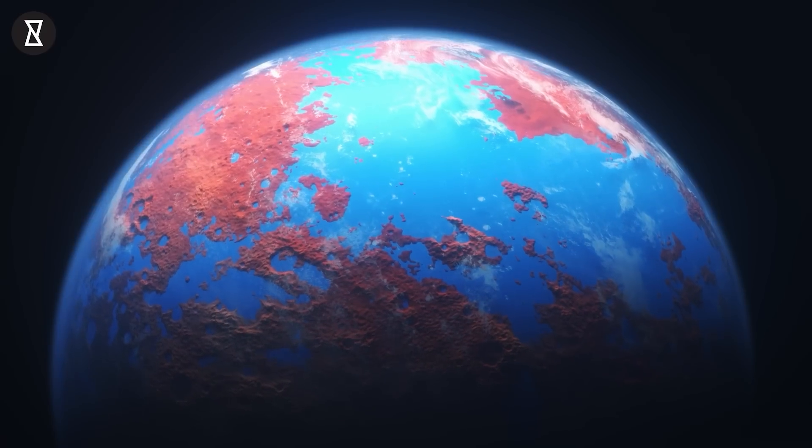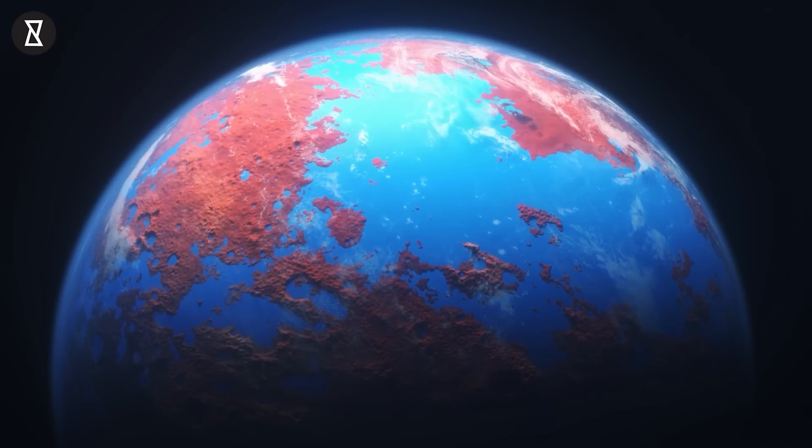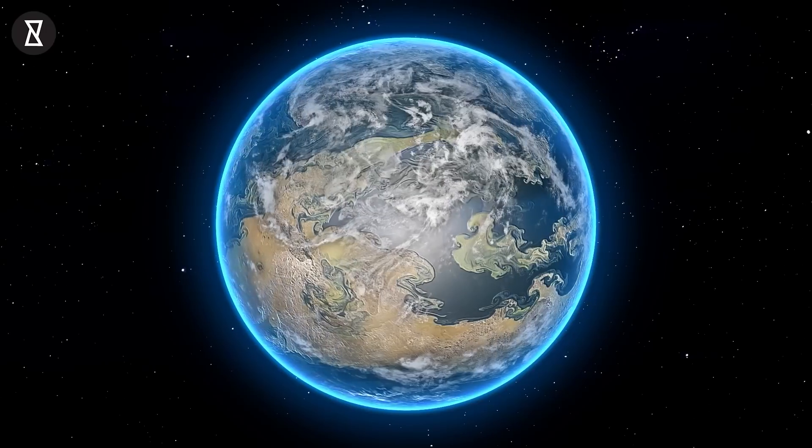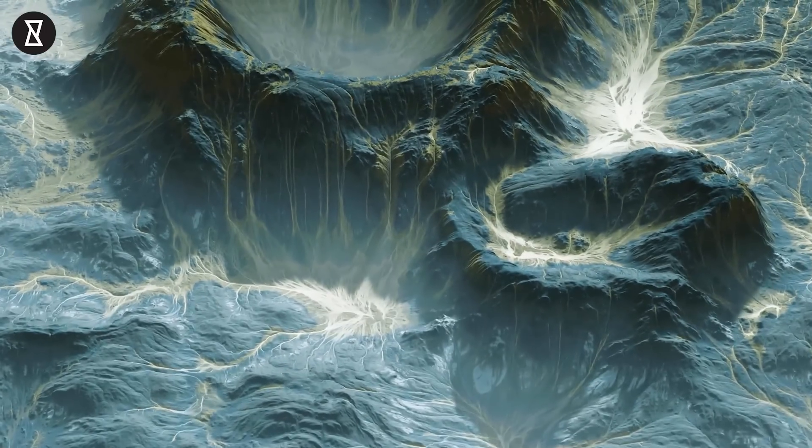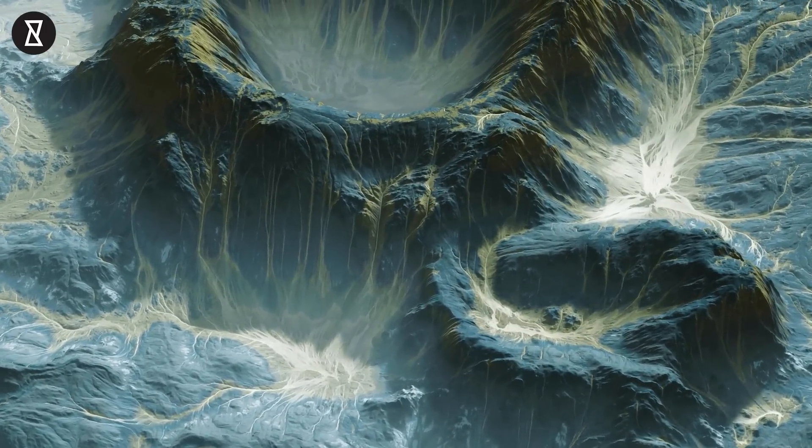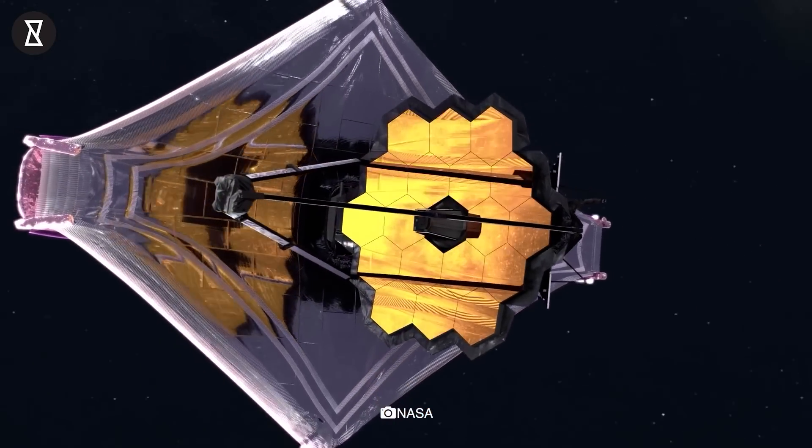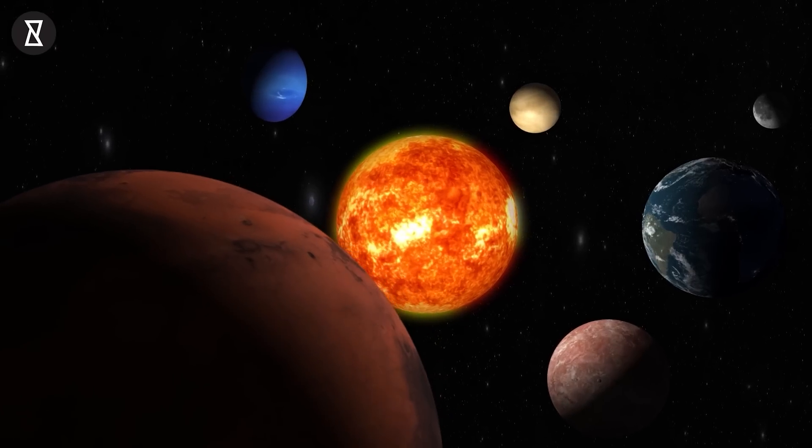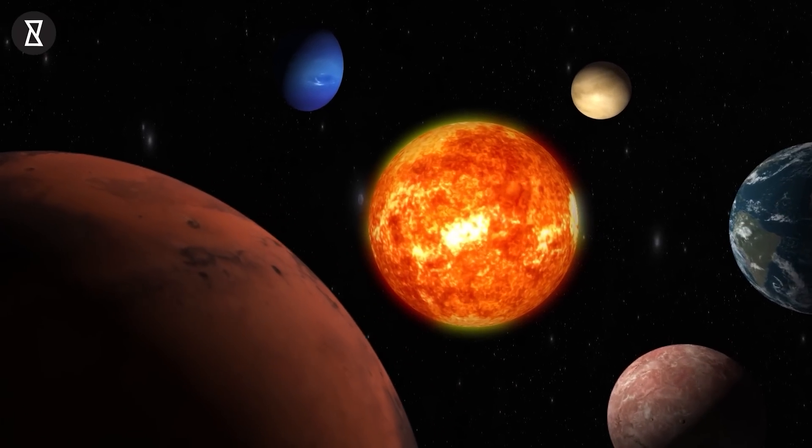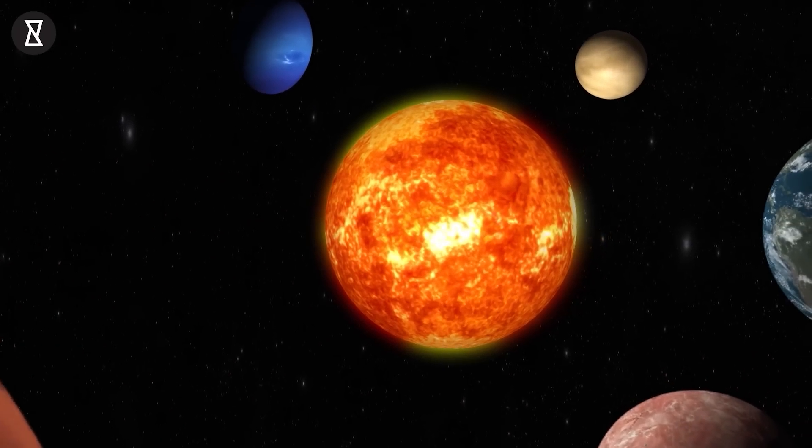Hubble first detected water on an exoplanet back in 2013. However, with Webb's advancements, the telescope is even more capable of detecting water clearly. As Webb digs deeper into exoplanets, there's no telling what scientists will find. We already know that NASA has a full docket of scientific missions for Webb to complete over the coming years.